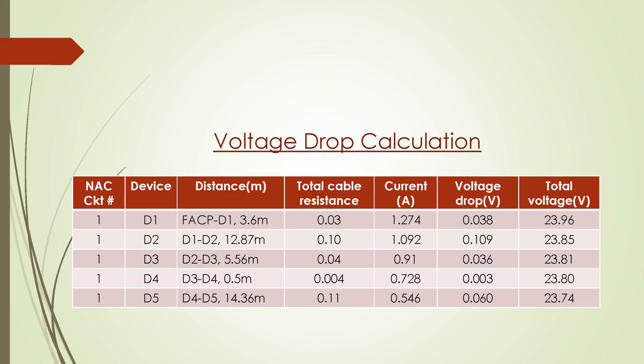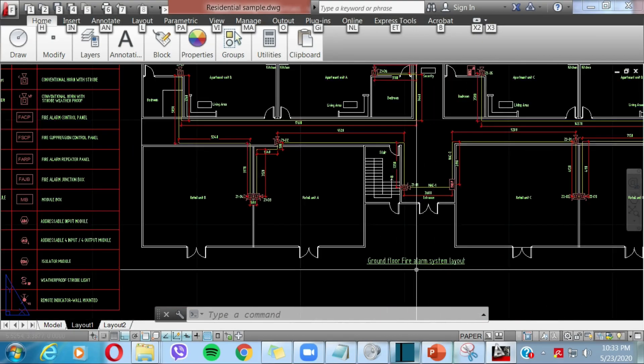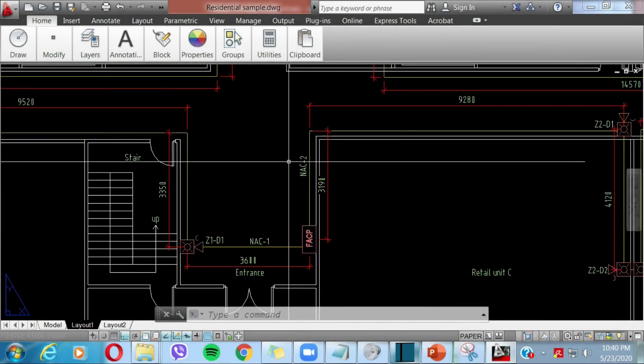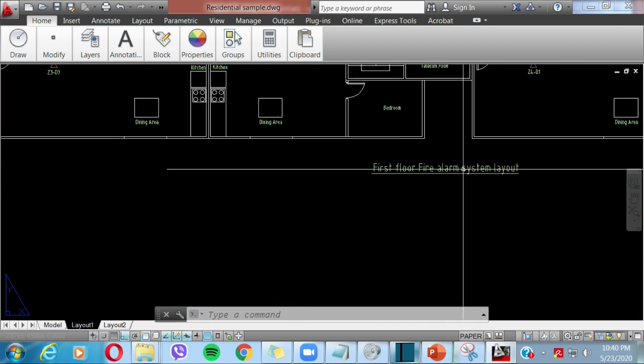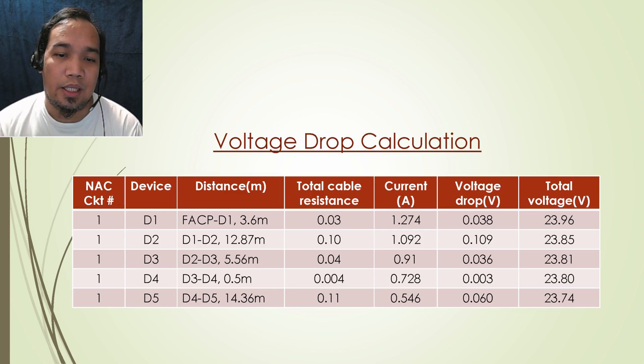I prepared a sample of fire alarm design for this tutorial. The type of occupancy is mixed occupancy. The building is residential G plus one floor with a retail unit at ground level. The design has four numbers of NAC or notification appliance circuit to cover the whole building. With instruction in step one to six which I discussed earlier, the details are summarized in table for NAC 1 and NAC 4 as example. NAC 2 to NAC 3 can be calculated as well in same procedure.